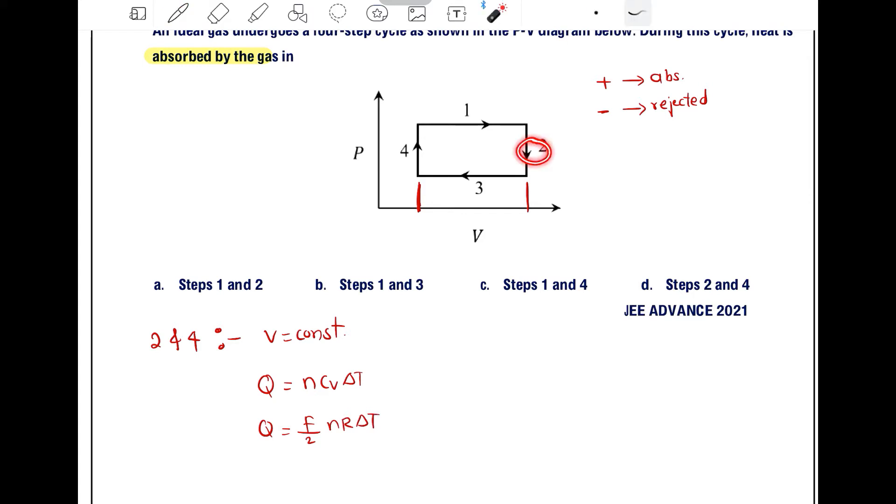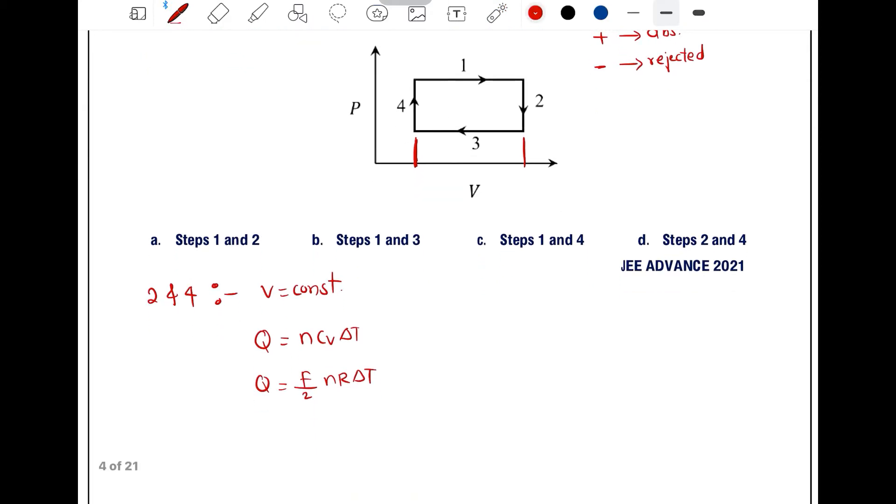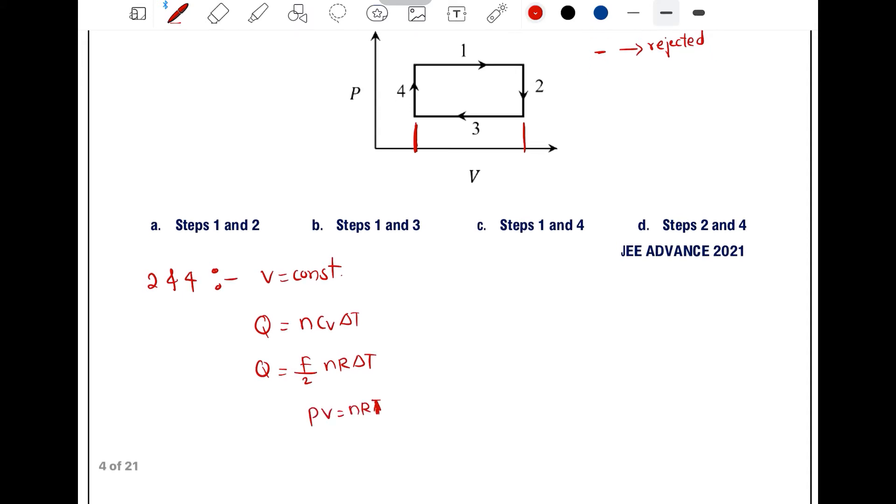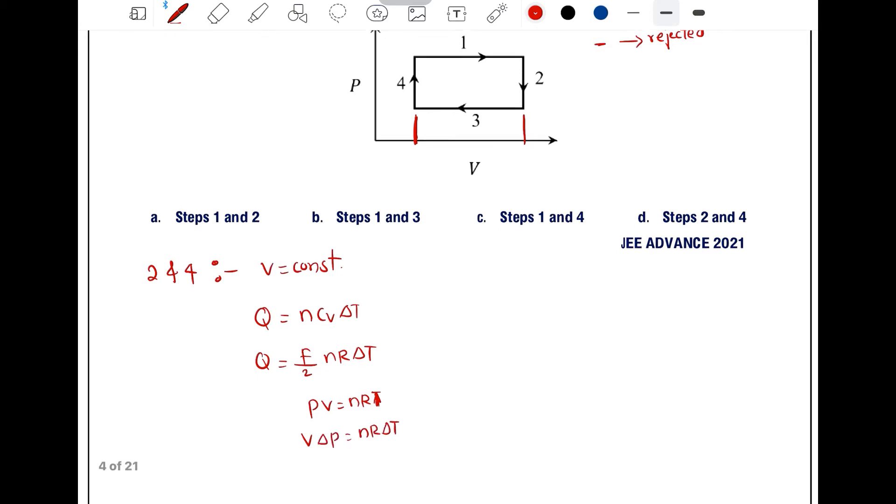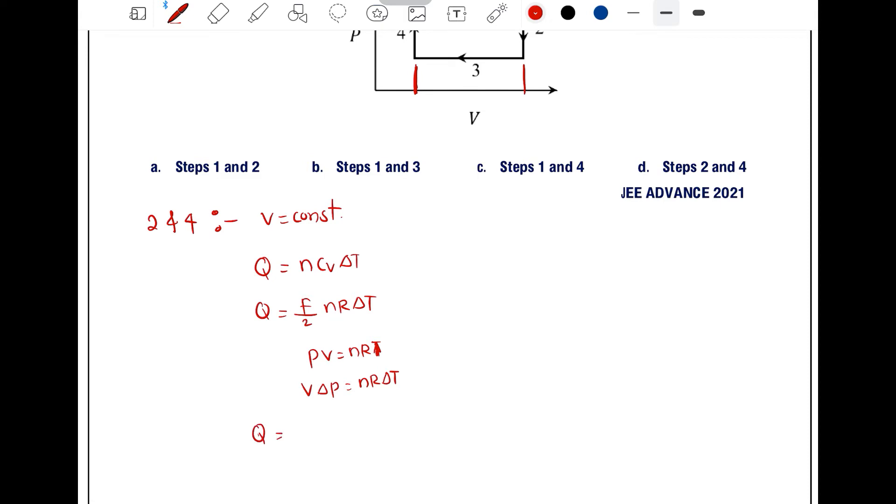In processes 2 and 4, temperature is not given, so we will convert this formula using pressure and volume. Using ideal gas equation PV equals NRT, if we differentiate with respect to temperature, and since volume is constant in both processes, V dP equals NR∆T. So NR∆T can be replaced by F by 2 V∆P. This is the heat in the isochoric process.